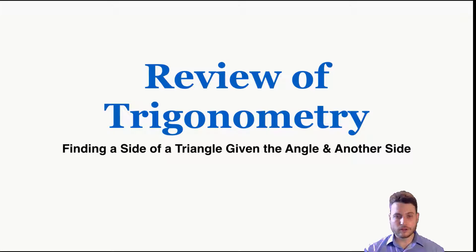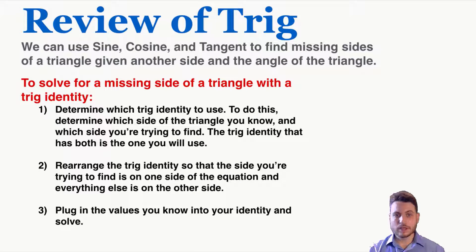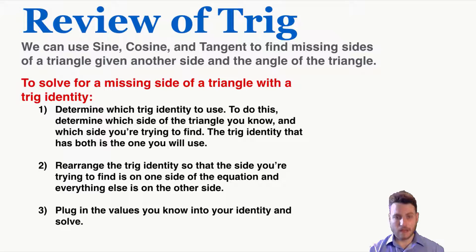This video is a review of trigonometry, which is about finding a side of a triangle given the angle and another side of the triangle. We can use sine, cosine, and tangent to find missing sides of a triangle given another side and the angle of the triangle.